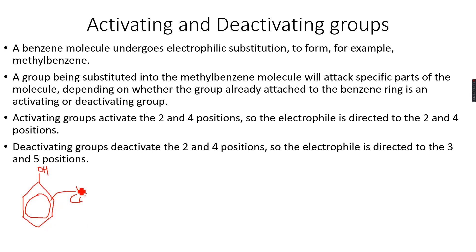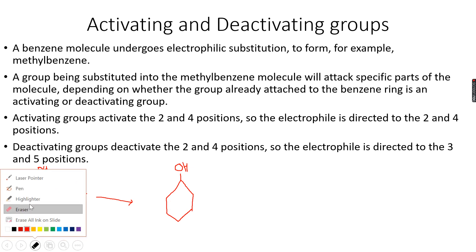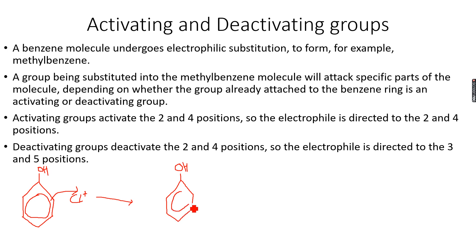I attack from here and I get my unstable intermediate — shown with a broken circle, not a full circle. The intermediate has a positive charge, with Cl and H attached. Then I draw the curly arrow because I want to make the ring stable again.